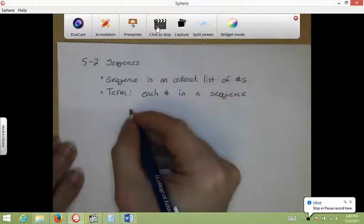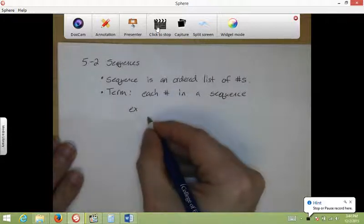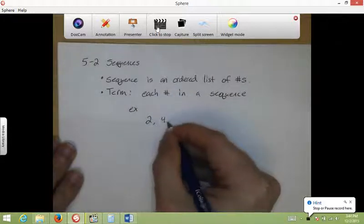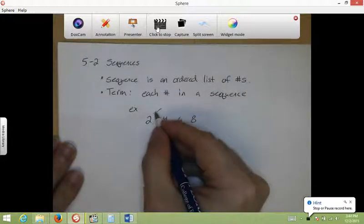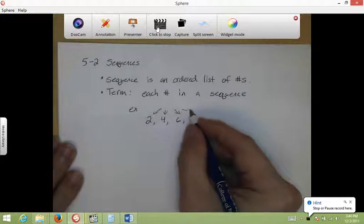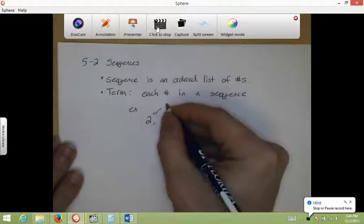The terms are each number in a sequence. So an example of that is let's say I have the sequence 2, 4, 6, and 8. All these numbers here, 2, 4, 6, and 8, these are all terms.